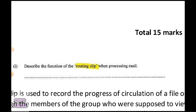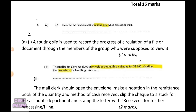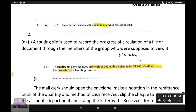Question two kicks off by asking you to describe the function of the routing slip when processing mail. A routing slip is used to record the progress and circulation of a file or document through the members of a group who are supposed to view it. Basically, the people who have had this file — or were supposed to have it — have their name on the card, and it gets passed to the different bodies who are supposed to receive it.